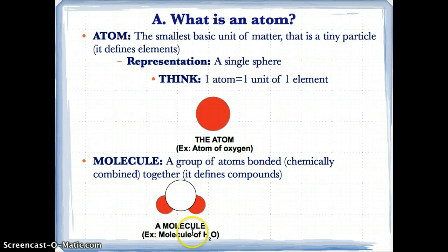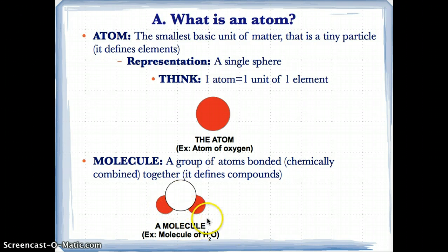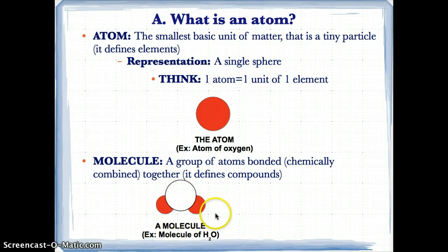Here's an example. This molecule is H2O — two hydrogen atoms and one oxygen atom. You have two different types of atoms: the H atoms on either side and the oxygen atom in the middle. That's three total atoms chemically combined together, which makes H2O a compound, also known as a molecule. So: atom is element, molecule is compound.